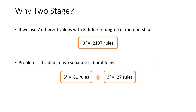Now I can explain why we have two stages. In this work, we use three linguistic terms — low, medium, and high — for our fuzzy input variables. If we tried to solve the overall problem at once, we would need to consider seven input variables, which would yield more than 2,000 rules. Managing that many rules is very challenging. Therefore, we divided this problem into two sub-problems and deal with much fewer rules. That's why we use two stages.